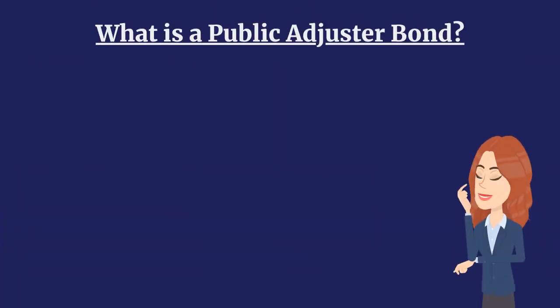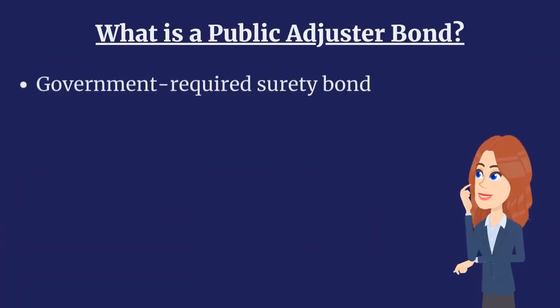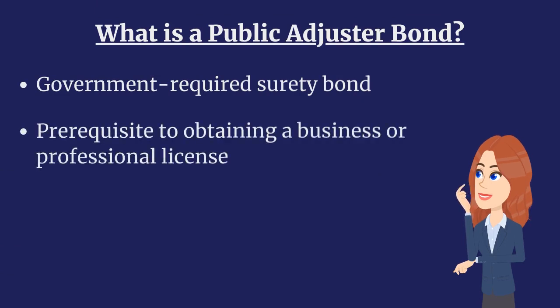A Public Adjuster Bond is a government-required surety bond that public adjusters must purchase as a prerequisite to obtaining a business or professional license.